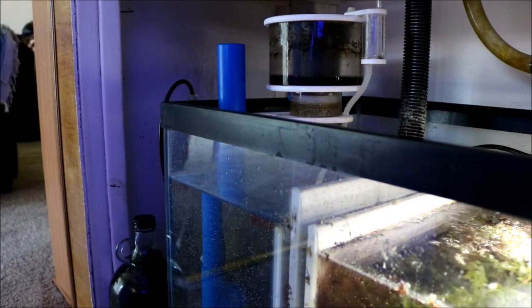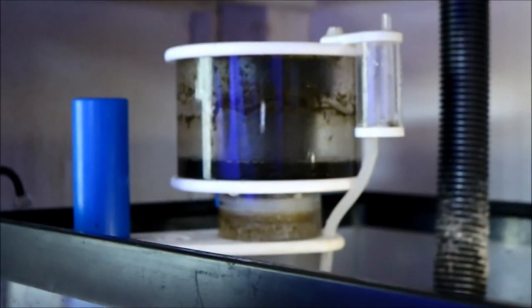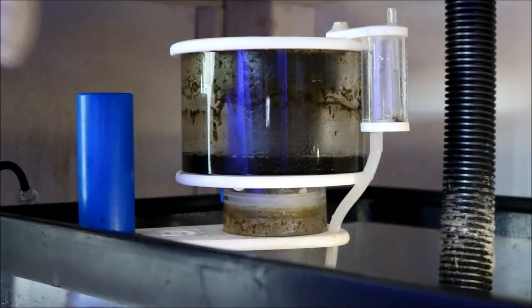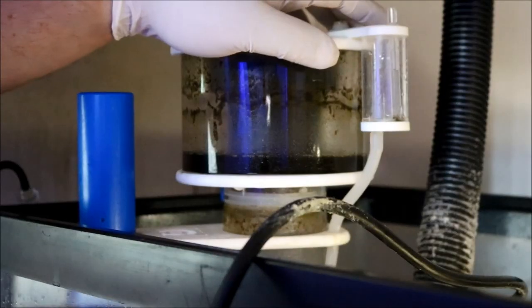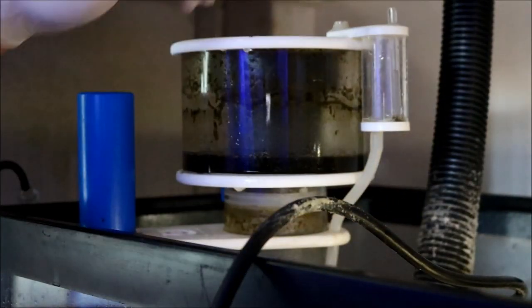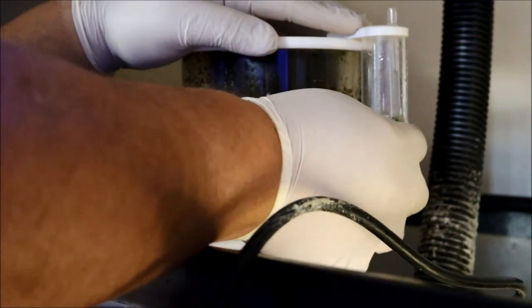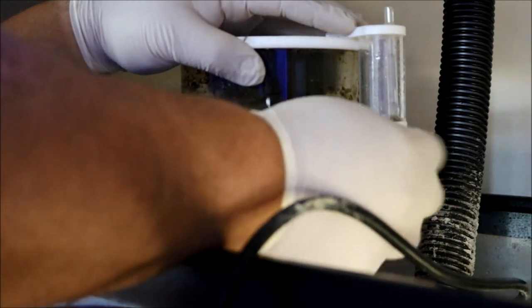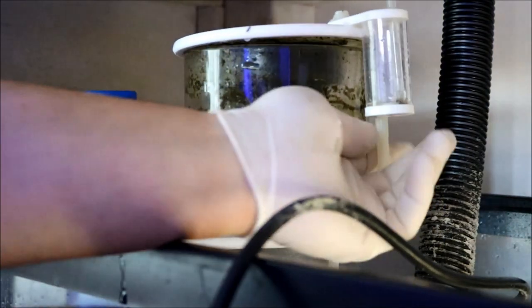Okay, so here I am underneath the stand looking at the skimmer. This is after the breakdown, and the first thing I have to do to get it out from underneath my tank is remove the waste collection cup. You'll notice I'm wearing gloves because whenever I work around the skimmer, I don't like touching this gunk with my bare hands.